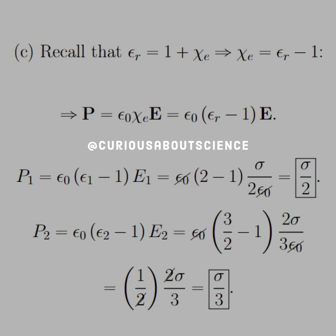For the polarization wanted in part C, it's useful to recall that the dielectric constant is equal to 1 plus the electric susceptibility, and therefore we can algebraically solve for this susceptibility in terms of the dielectric constant and substitute that into the polarization equation, which we see in the line below.